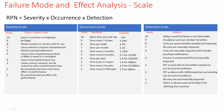For example, a severity of 5, occurrence of 5, and detection of 5 gives an RPN score of 125. Any failure mode whose RPN score is greater than 100 should be taken up and worked upon. If the RPN scores of two failure modes are similar, then the failure mode with the greater severity score is to be prioritized.